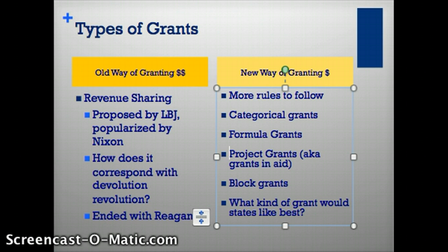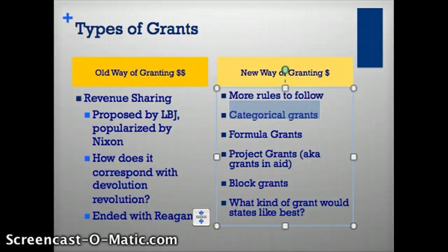With grants, you have a little bit more rules to follow — a couple more provisions. Granting money to the states is another way that the federal government can make sure the states are providing for their people. Categorical grants are money that the federal government gives to a state for a very specific purpose.